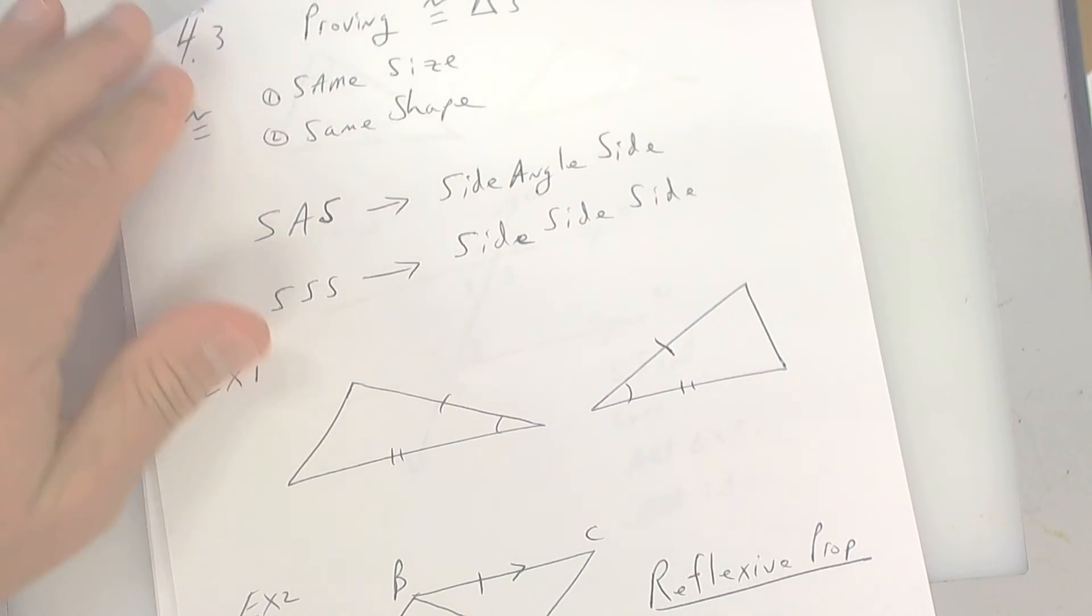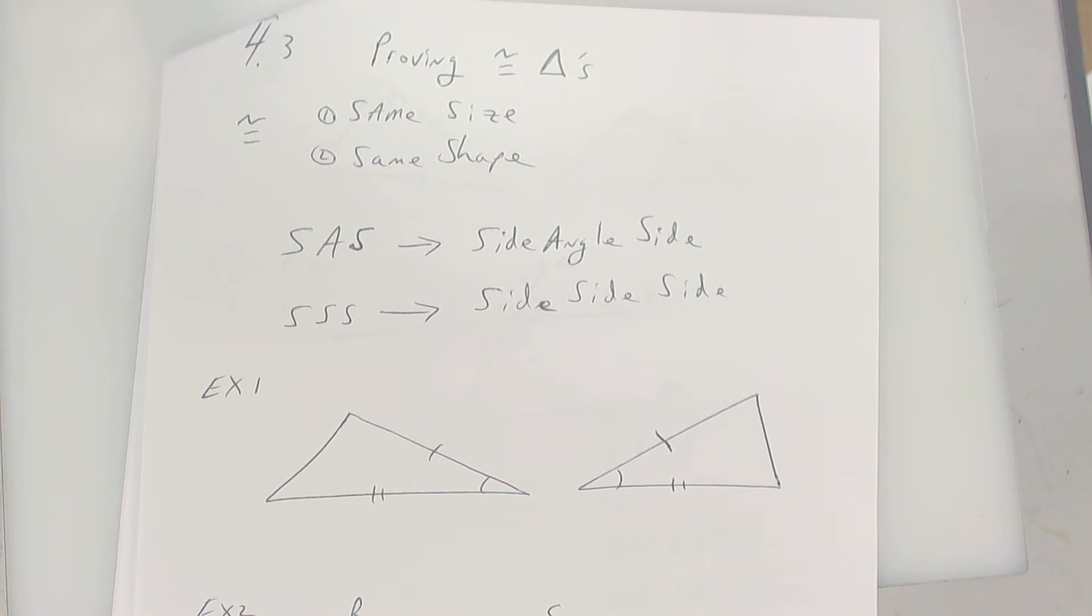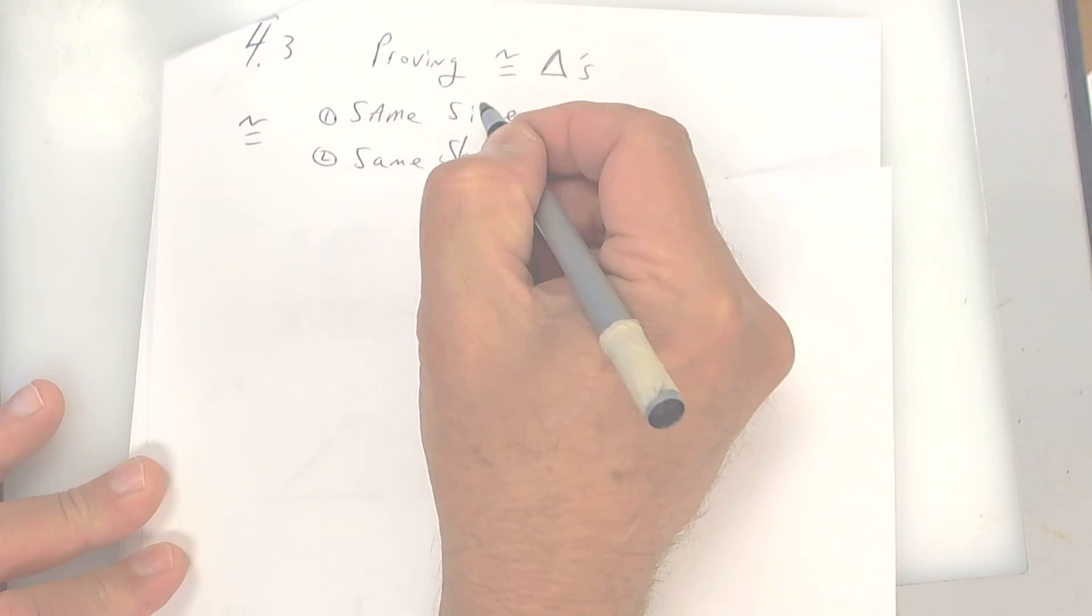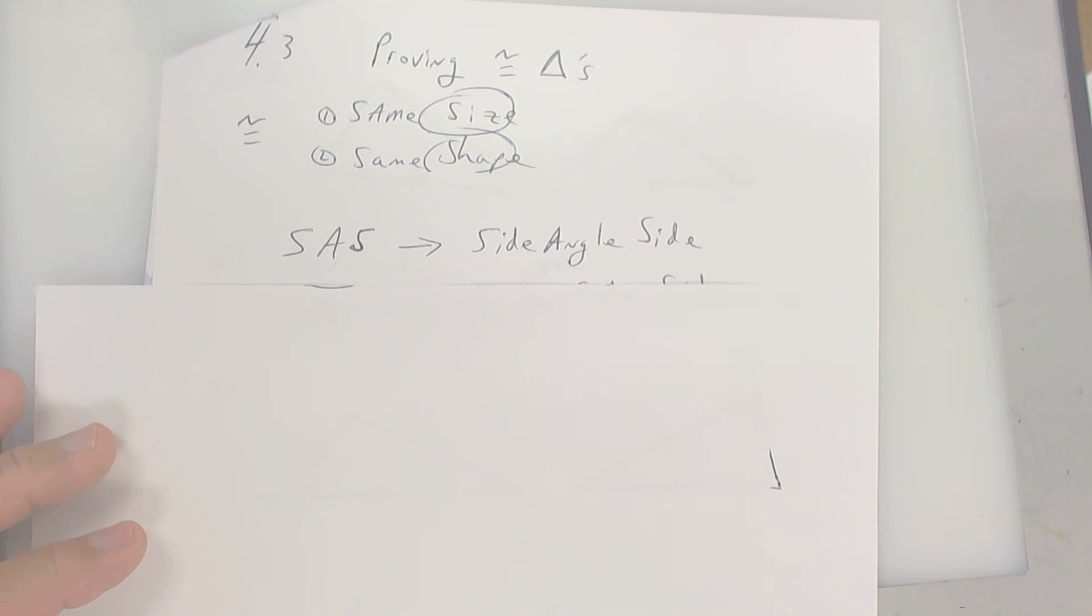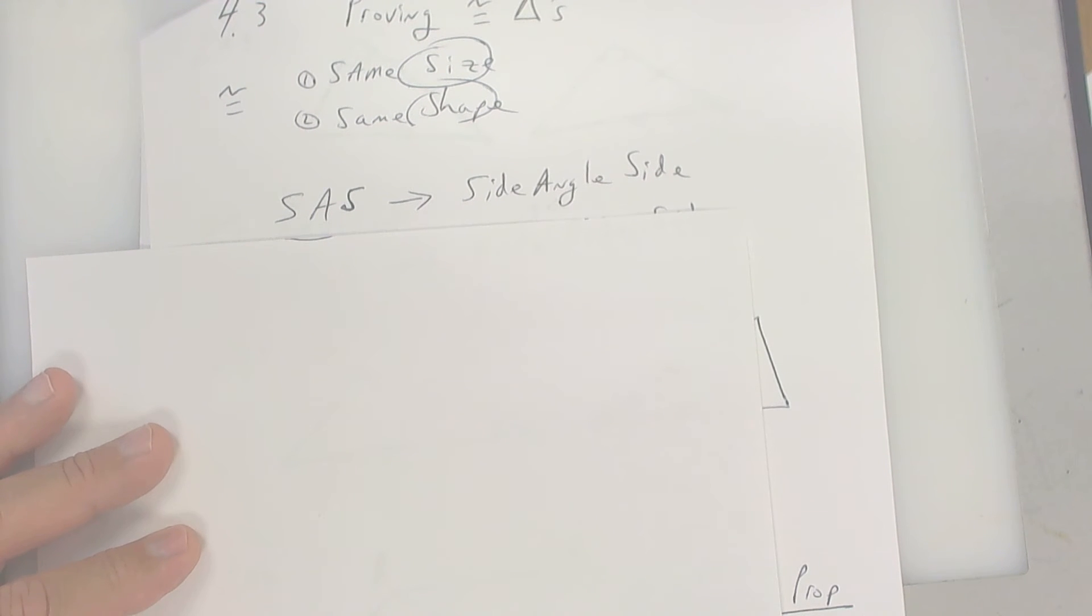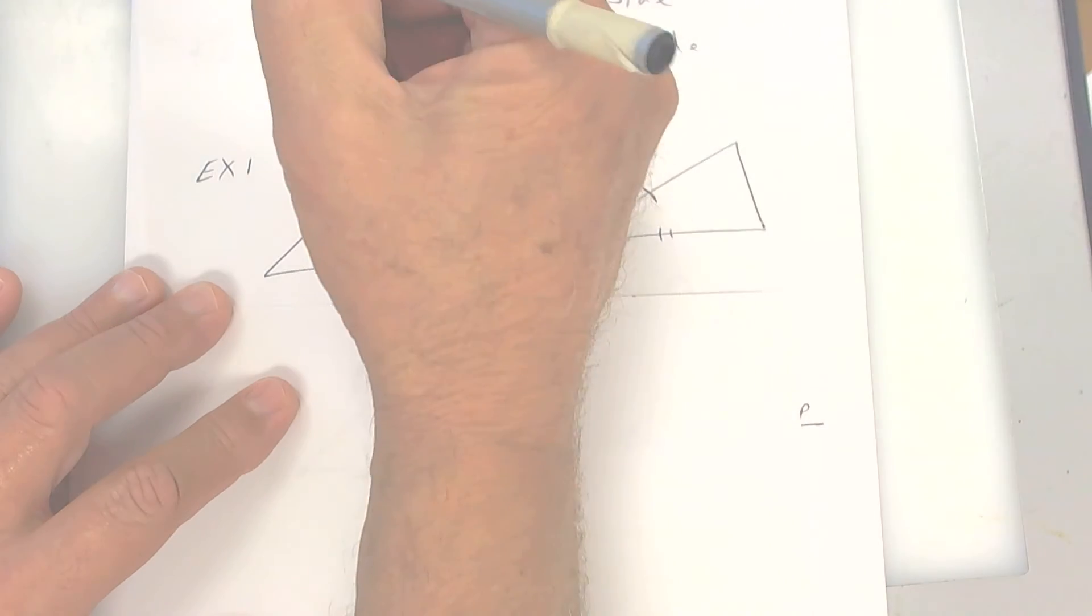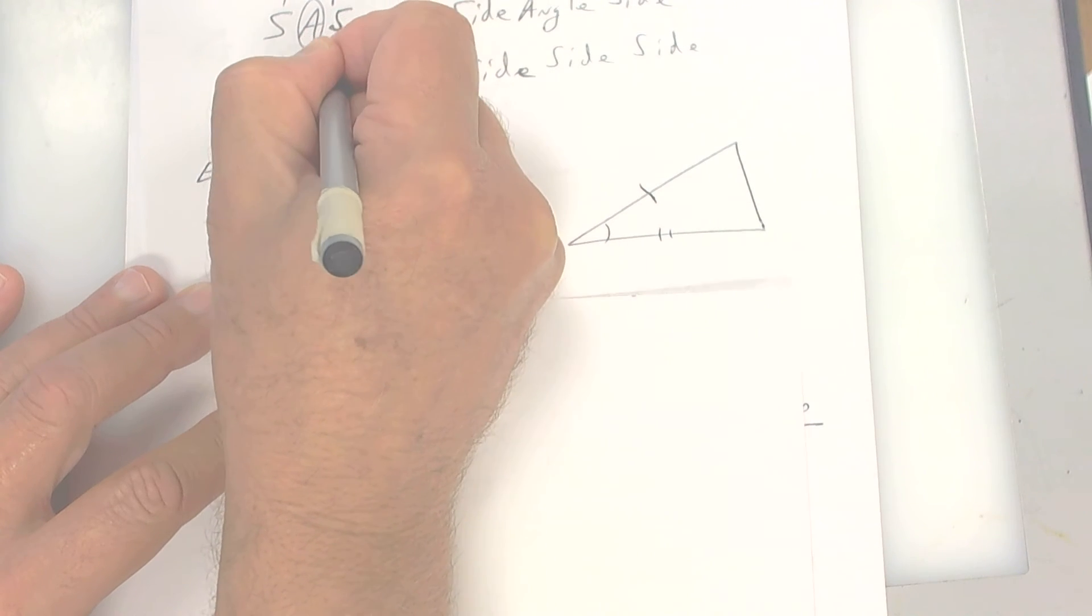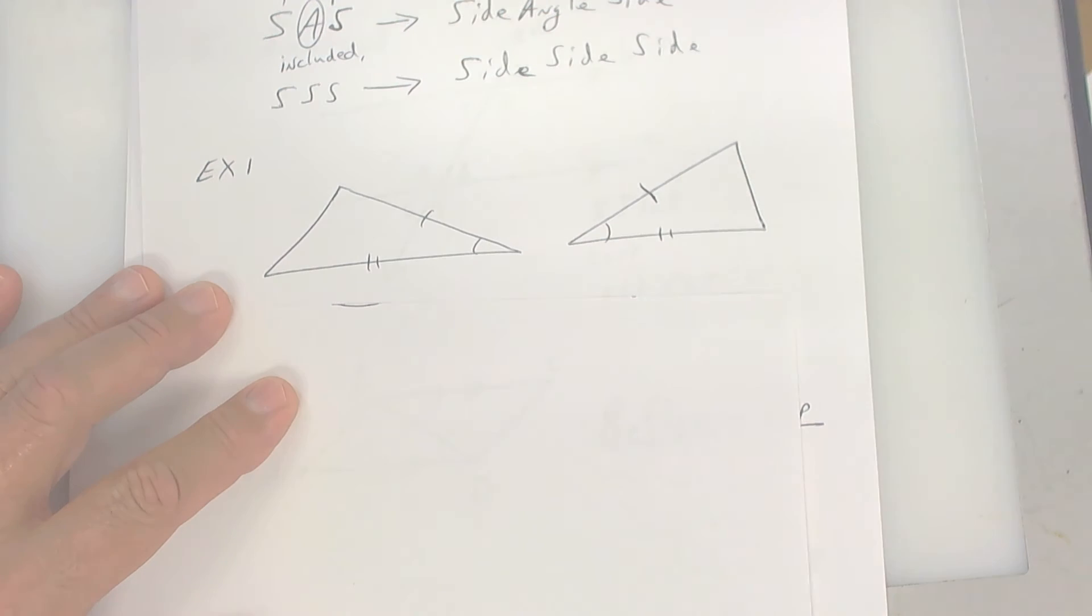Now, we're going into a new section. Proving triangles congruent. Copy everything you see there. In order for triangles to be congruent, they must have two things: the same size and the same shape. All right. Let's take a look at this one. There are two ways right here. Now, there's a bunch, like 5 or 6 or so. But there's something called side-angle-side, and there's something called side-side-side. So let's take a look at this triangle here. Notice how this angle is in between the two sides. That's called included. Write that down. It's kind of like peanut butter and jelly sandwich. The good stuff is squeezed in between the bread. That's called included.